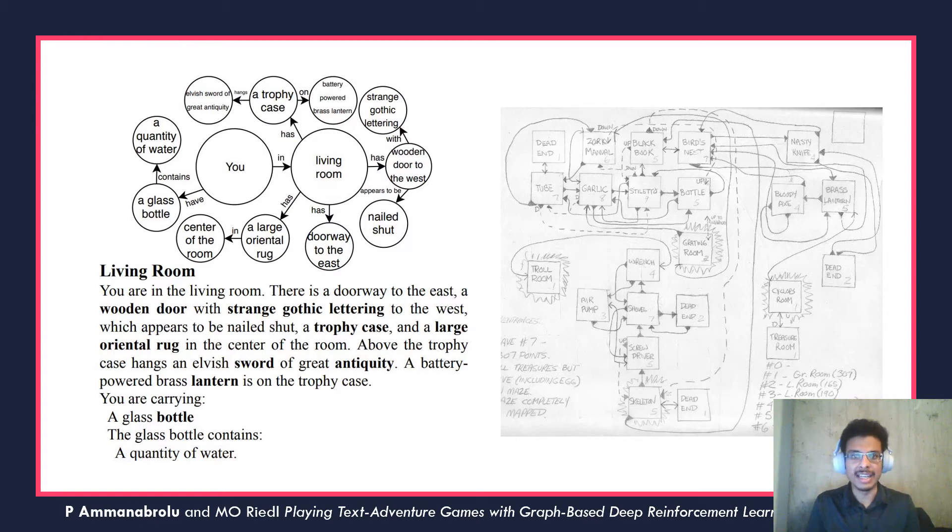We've decided to adapt this representation because we believe it helps with both challenges we just talked about. The actual graph representation looks something like what you see on the left here. It's a set of subject-relation-object triples designed to give the agent a mental map of the world: locations, objects, their attributes, and so forth.